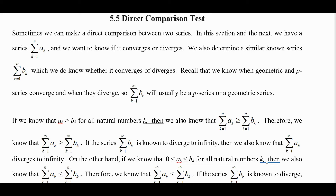We will have a series — a sum from k equals 1 to infinity of a sub k — that we want to know about whether it converges or diverges. We'll compare it to a similar known series, a sum from k equals 1 to infinity of b sub k, which we do know whether it converges or diverges.